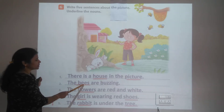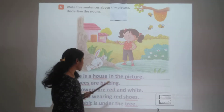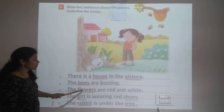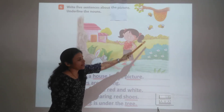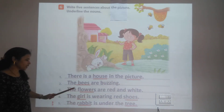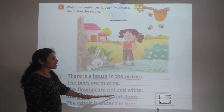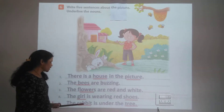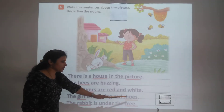Second sentence: The bees are buzzing. 'Bees' is a noun — underline it. Third sentence: The flowers are red and white. 'Flowers' is the noun — underline it. Fourth sentence: The girl is wearing red shoes. 'Girl' and 'shoes' are both nouns — underline both.